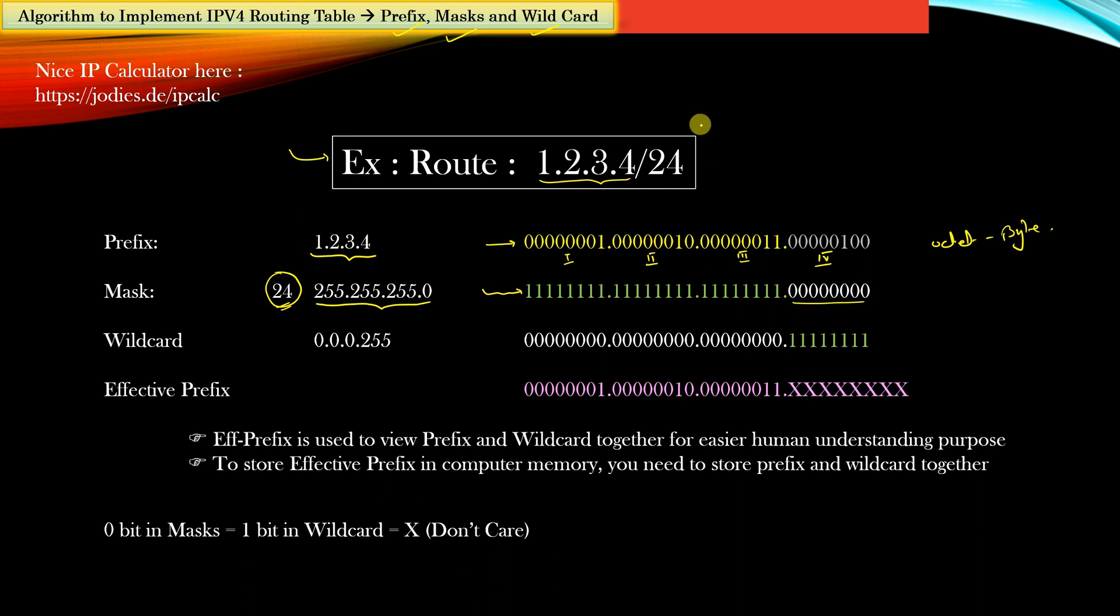When we say slash 24, it means that the first 24 bits of the mask are all ones. And of course the mask length is always 32 bits and the prefix length is always 32 bits. This length is fixed and constant for IPv4 addresses.